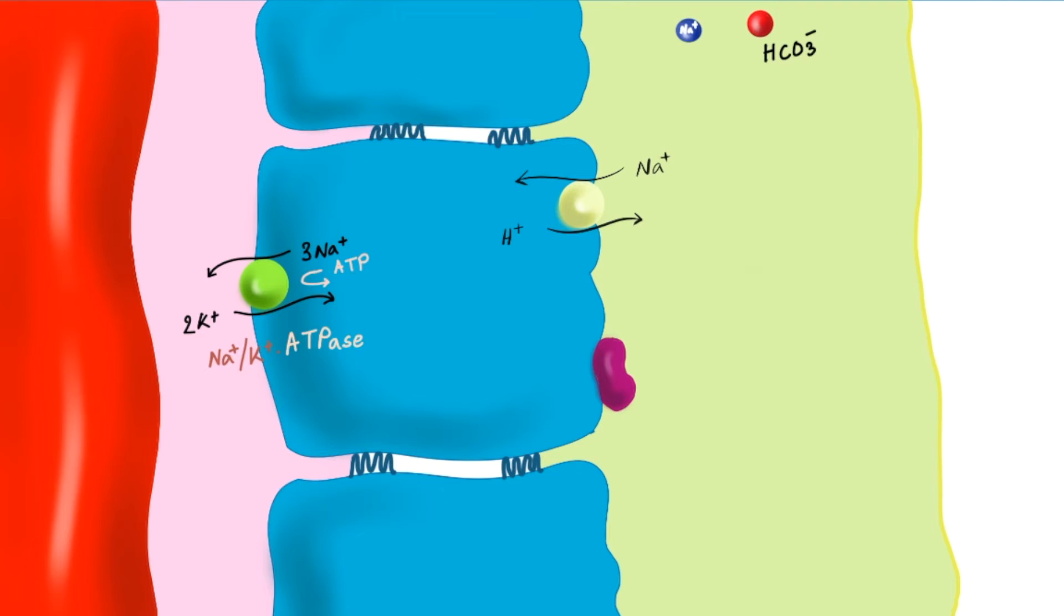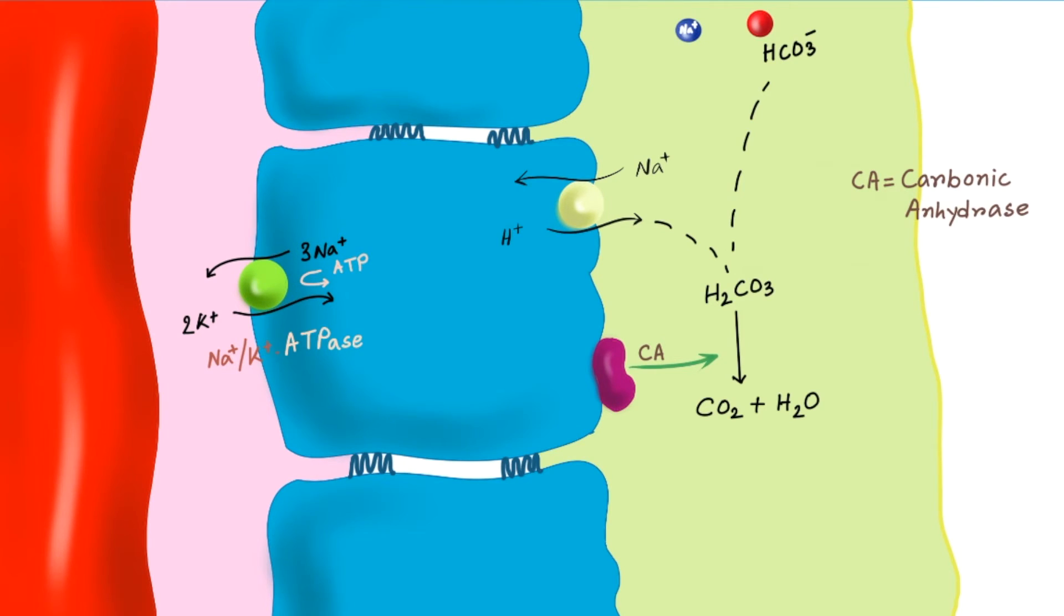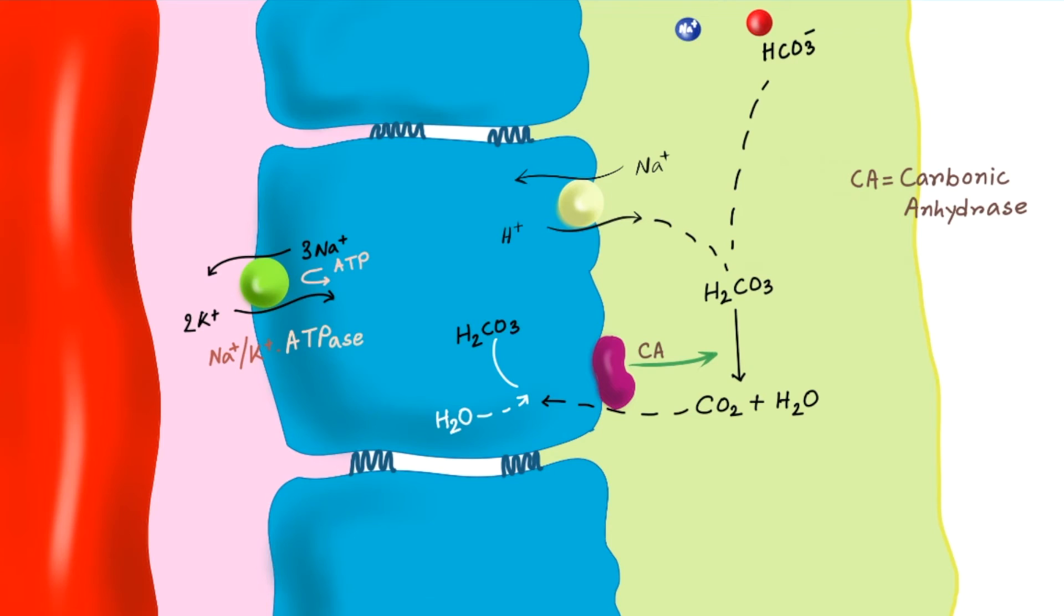Now as we already discussed, in exchange of sodium ion, protons are secreted into the lumen of proximal convoluted tubule. This hydrogen ion binds with the bicarbonate molecule and forms carbonic acid. There is another important enzyme present in the luminal membrane called carbonic anhydrase. This enzyme breaks this carbonic acid into water and carbon dioxide. Carbon dioxide is lipid soluble so they are reabsorbed back into the intracellular area. This carbon dioxide then binds with the intracellular water and forms carbonic acid again. The enzyme involved in this process is again carbonic anhydrase.